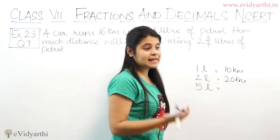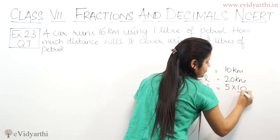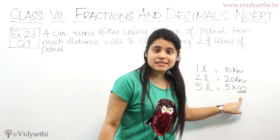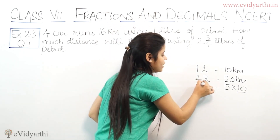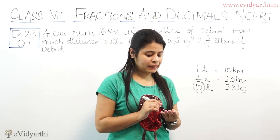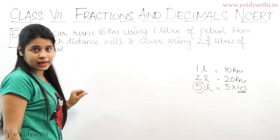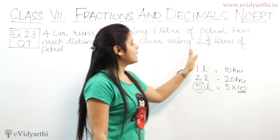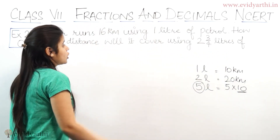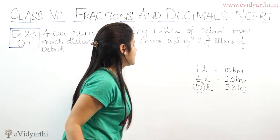So how much will it be? It's 5 into 10. When you have 1 litre it's 10 km, so for 5 litres it will be 5 times that. Similarly, here it will be 16 km per litre — so simply multiply it. Let's start.